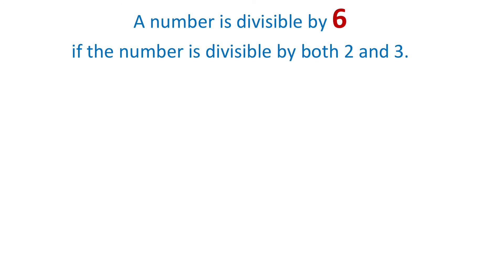A number is divisible by 6 if the number is divisible by both 2 and 3. For example, the number 84 is divisible by 6 because this number is divisible by both 2 and 3. We know that a number is divisible by 2 if it ends with 0, 2, 4, 6, or 8. This number ends with 4, therefore it is divisible by 2. Also, this number is divisible by 3 because if we add the digits 8 and 4, we get 12, and 12 is divisible by 3. Therefore, the number 84 is divisible by 6 and the result is 14.